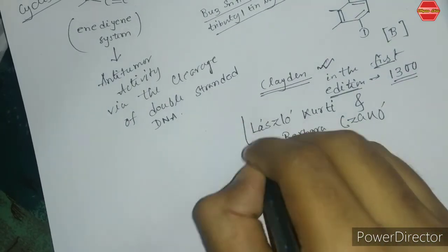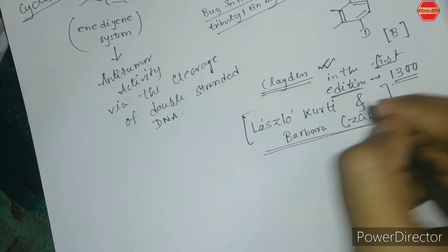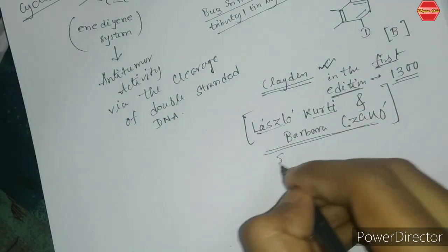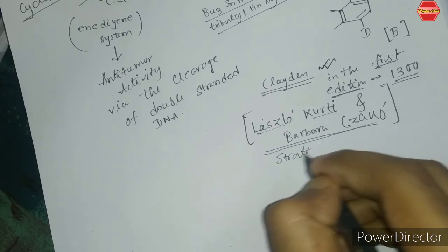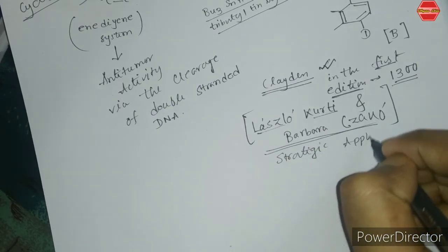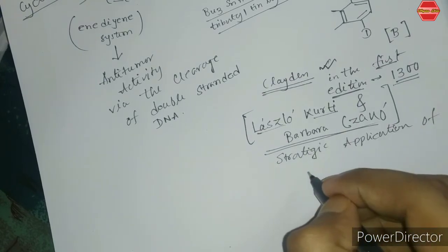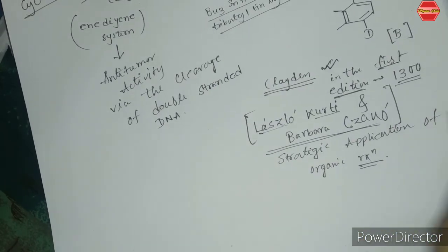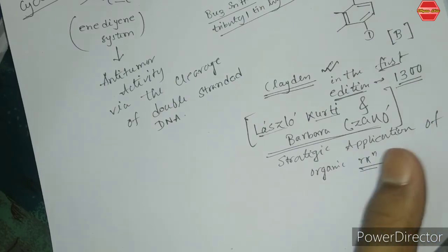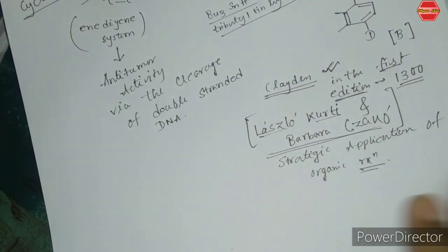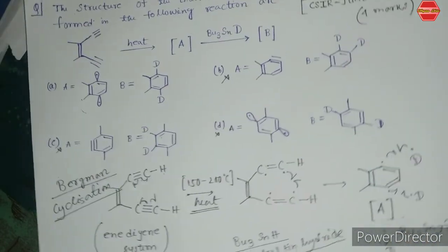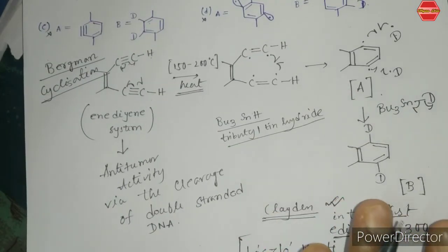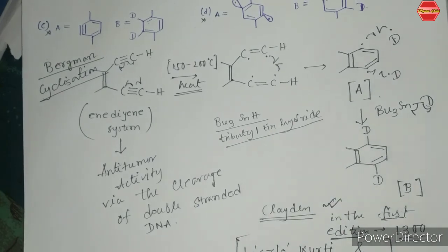There is also another very good book on name reactions written by Kürti and Czakó. The name of the book is probably 'Strategic Applications of Named Reactions in Organic Synthesis.' I will put the link to this book in the description section so you can download it. I hope this video is useful for you — please subscribe to my channel for more videos. Thank you for watching, see you in the next video!